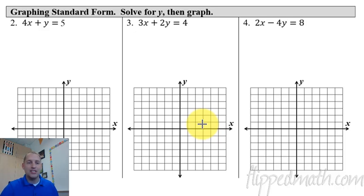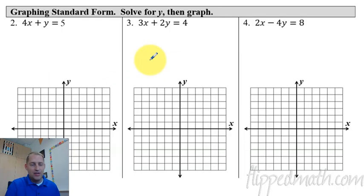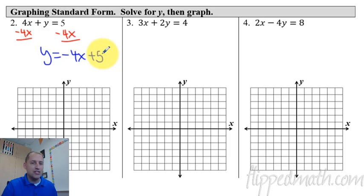So now we have standard form equations. Instead of slope-intercept form, it's standard form. So the first three examples here, what we're going to do is just solve for y. If we solve for y, then it's going to look just like this slope-intercept form because y will be by itself. All right, so I'm going to subtract 4x from the left, subtract 4x from the right, and we get y equals negative 4x plus 5. Okay, now it's in slope-intercept form. Really easy to graph.